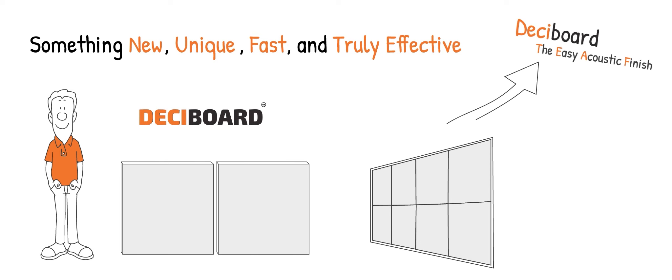Additionally, John got Deciboard easy acoustic finish to reduce some extra few decibels and even improve acoustics within his room.